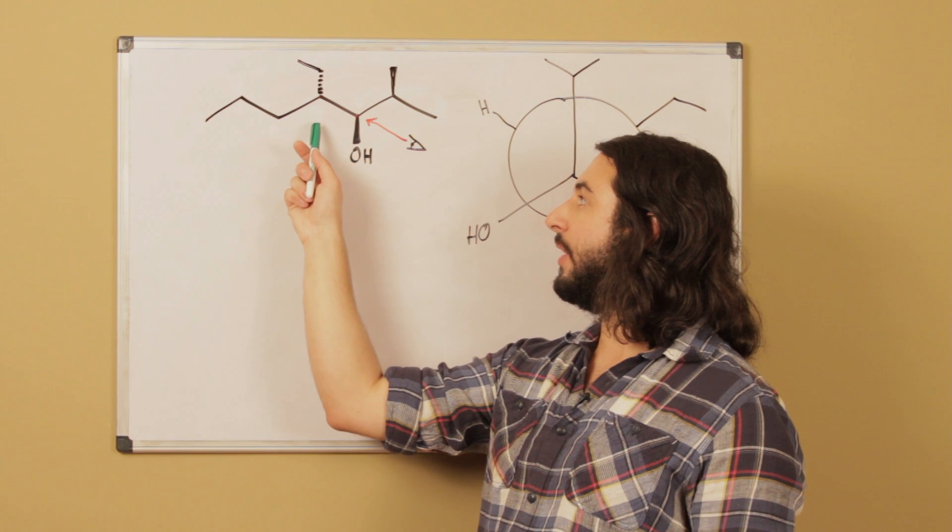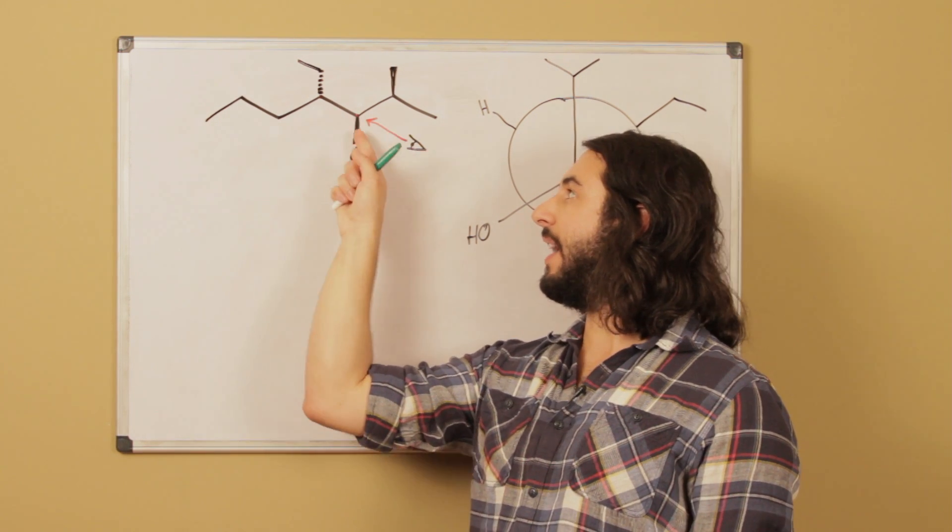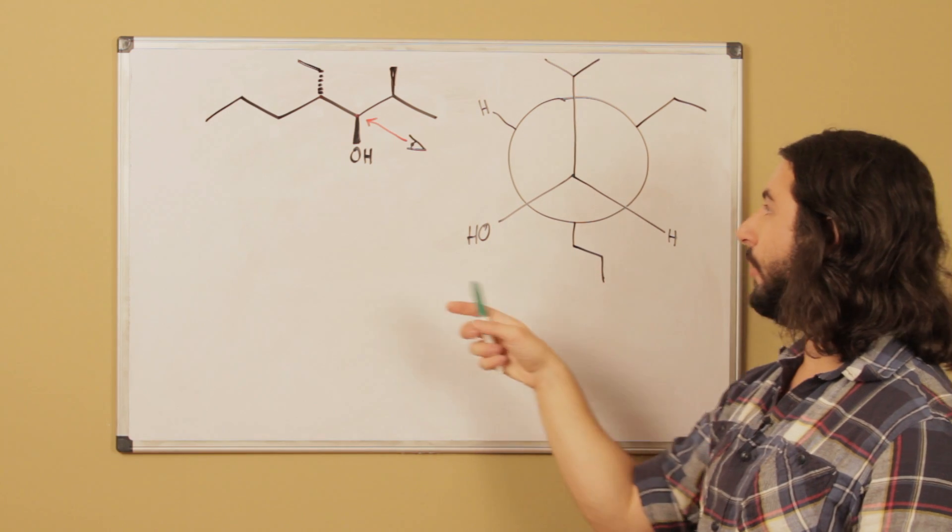Now on the back carbon, going down, we have a propyl group, that's directly down from here. So there's the propyl group.